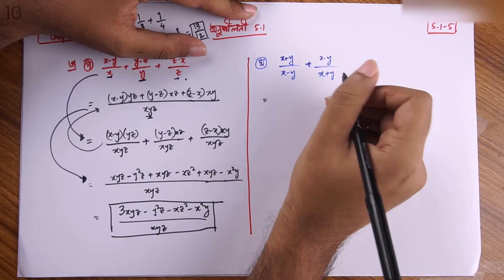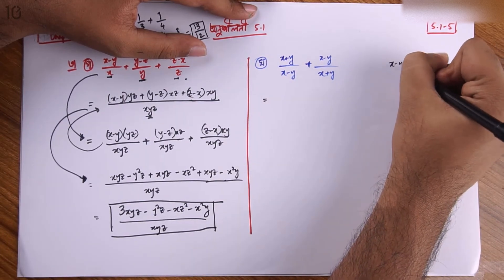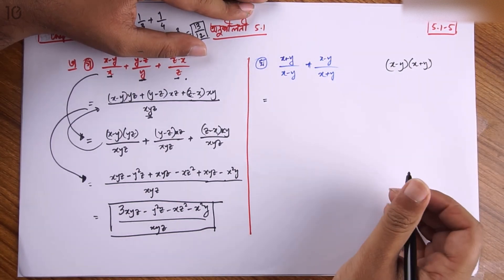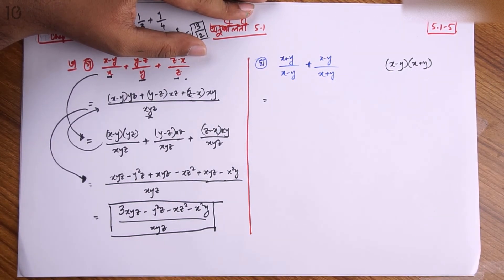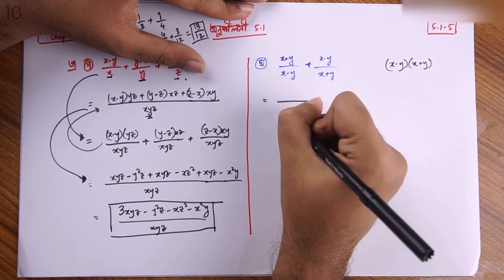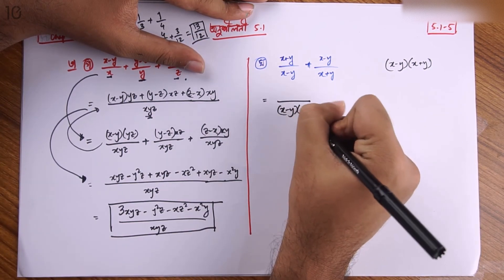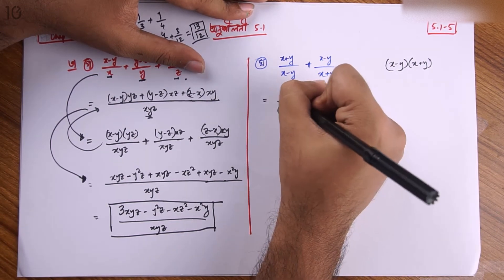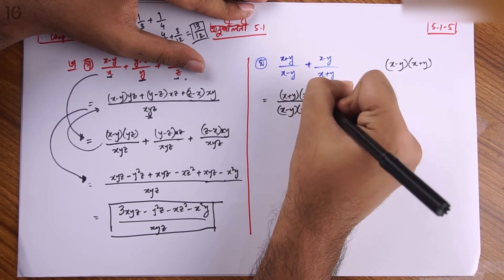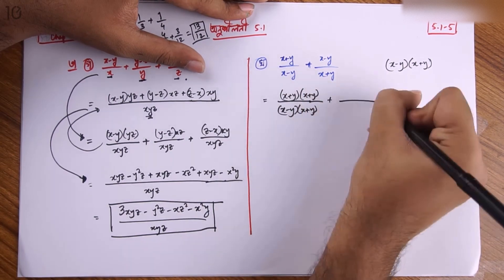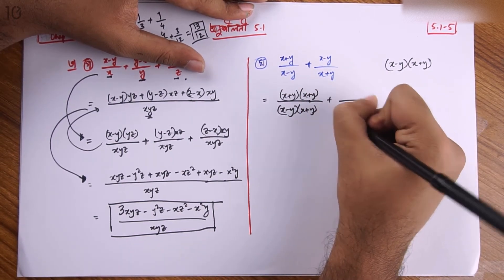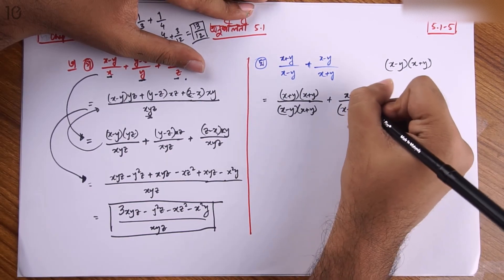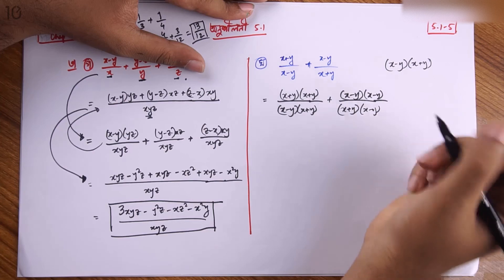x minus y और x plus y — लशगो कोता हावे? x minus y गुन x plus y। साधरान common नार की छो नहीं, फेटोरां गुन कोरें जेले आमादेर लशगो पिया जाब। ताहोले एटाके वियो फेटोरा — 0 शितो कोरें — एकाने x minus y आए याच्चे, उपर x plus y। साधरान भी शितो कोरते x minus y दे गुन कोरलां, the x-y into x-y, to x-y.